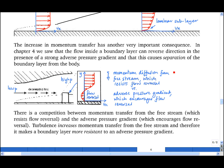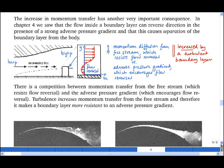And the key point is that a turbulent boundary layer greatly increases the momentum diffusion from the free stream. So when a boundary layer becomes turbulent, it becomes more resistant to flow reversal. And this can be seen very clearly in experiments.